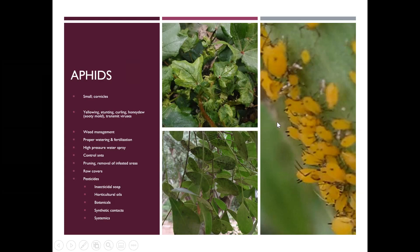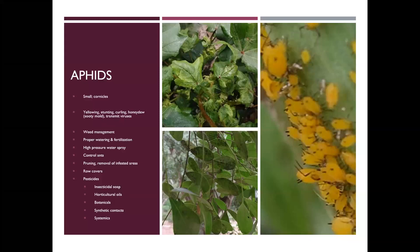Those are called cornicles. If you see little teardrop-shaped insects — typically on the underside of the foliage, or sometimes along the stem of the plant, especially on tropical milkweed — these are small soft-bodied insects. They are relatively easy to kill in the sense that they're small and soft-bodied, but they can be difficult to manage because they are crazy when it comes to reproduction.